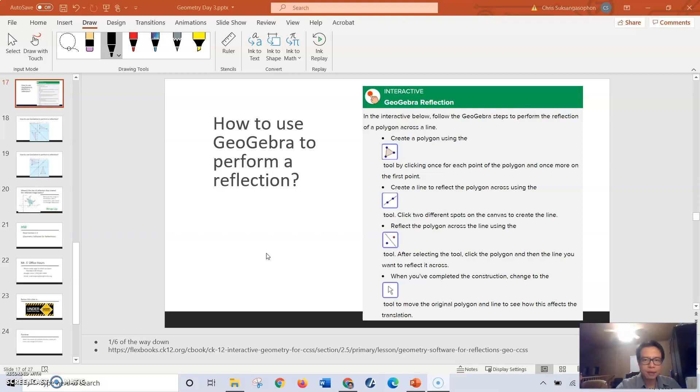This app here, you're going to be focusing on these four tools. Step 1, we're going to use the polygon tool to create a shape. You can make a triangle, a square, a pentagon, your choice.